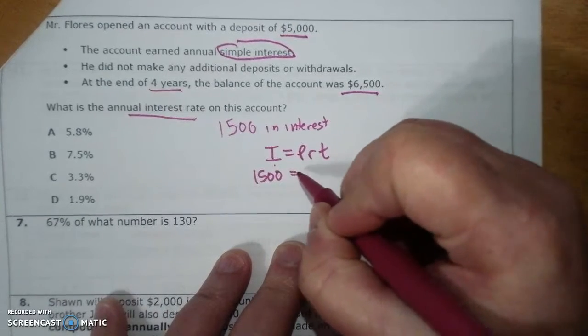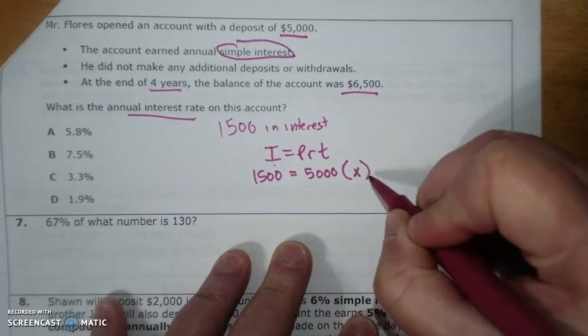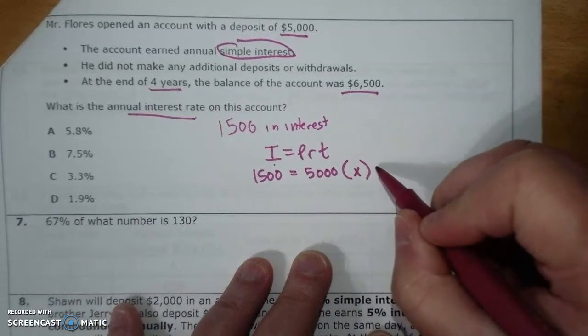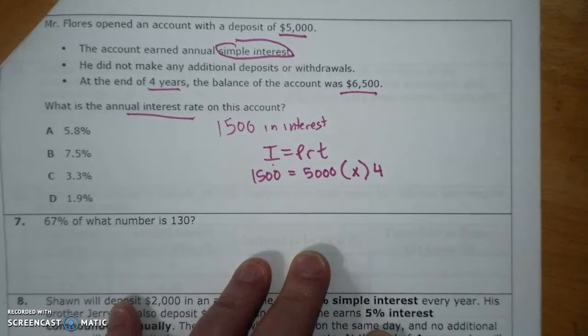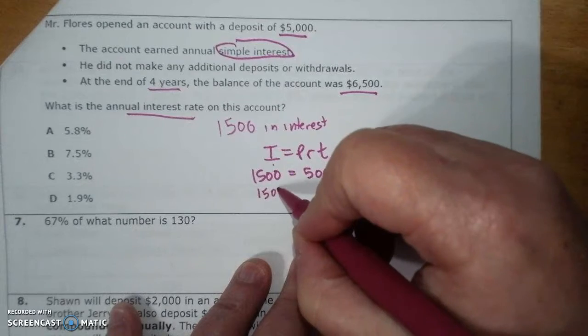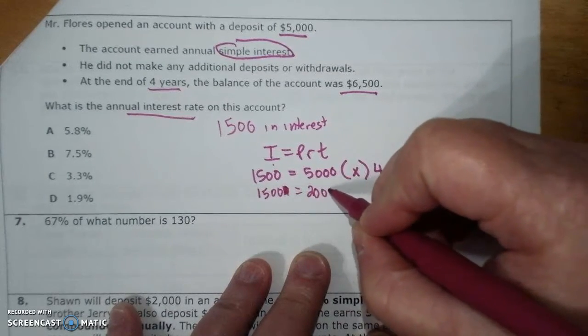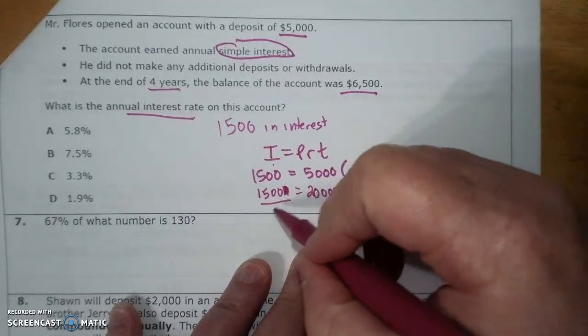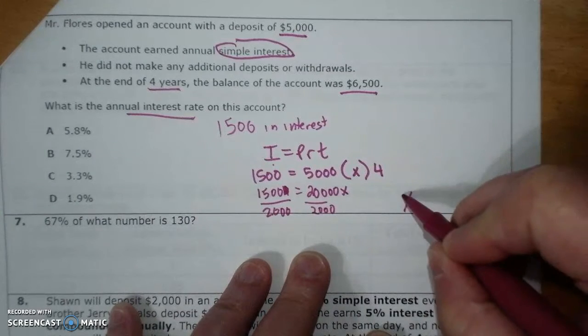$1,500 equals principal of $5,000. I'm going to put X here for the rate, and the time is 4. So I'm going to multiply that, solving an equation now. So I'm multiplying 5,000 times 4, get 20,000. So I have 1,500 equals 20,000 X. Divide both sides by 20,000.